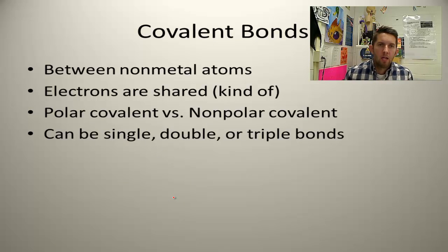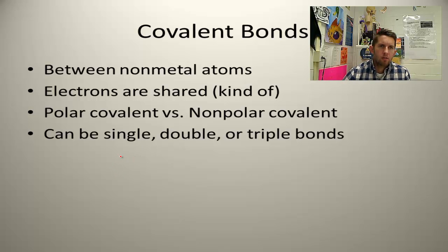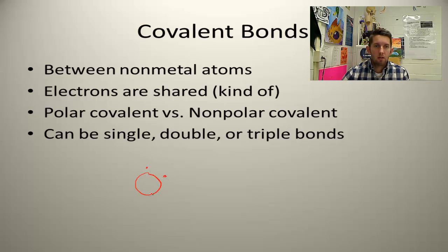Covalent bonding is between nonmetals. Recall that ionic bonds are between metals and nonmetals. In covalent bonds, electrons are shared — kind of. It's more like a tug of war between atoms over electrons. For example, oxygen has six valence electrons and will often bond to hydrogen.